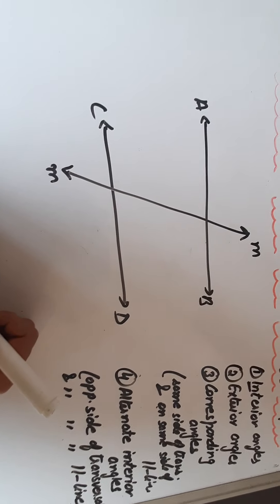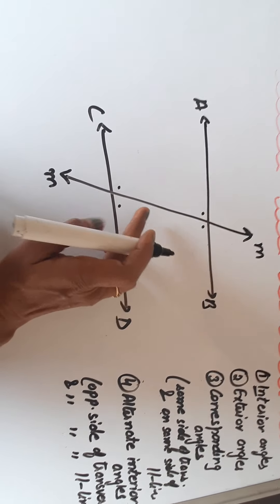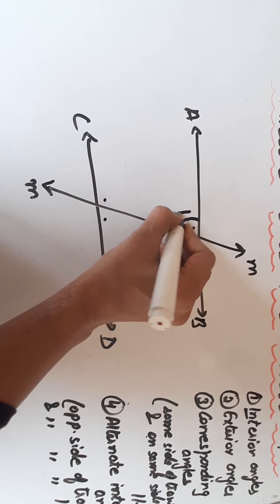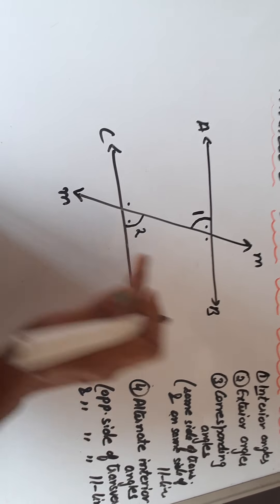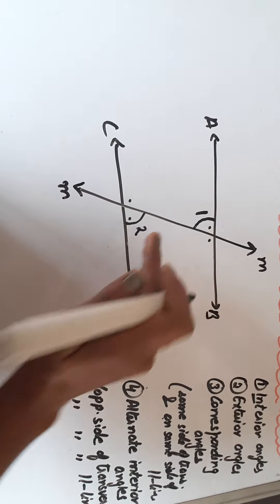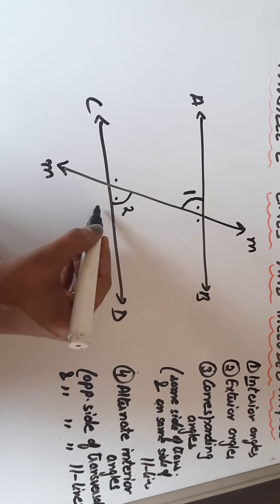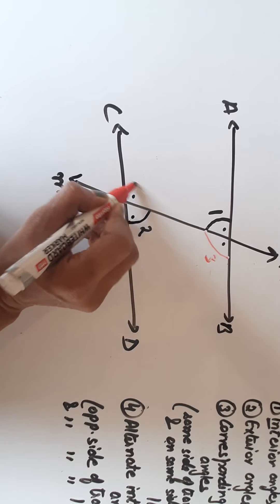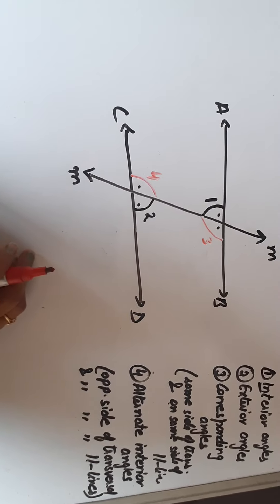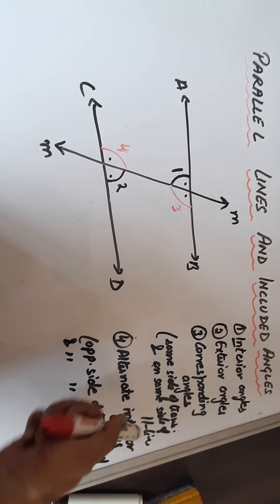Next is alternate interior angles. The word 'interior' means we focus only on interior angles. Alternate means opposite side of transversal and opposite side of the parallel lines. So if angle 3 is at the left and below the first parallel line, its alternate interior angle will be at the right and above the second parallel line. So angle 3 and angle 6 are alternate interior angles, and similarly angle 4 and angle 5.